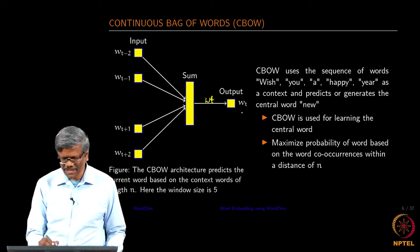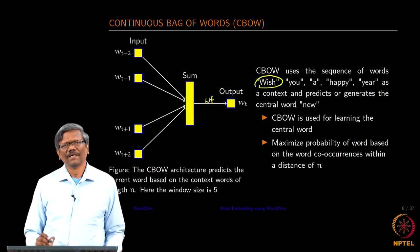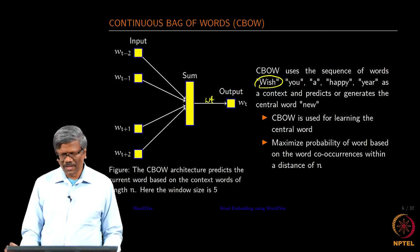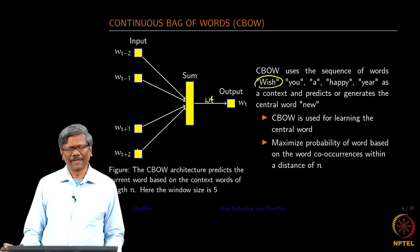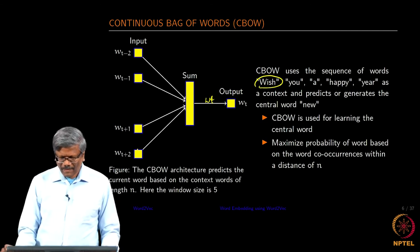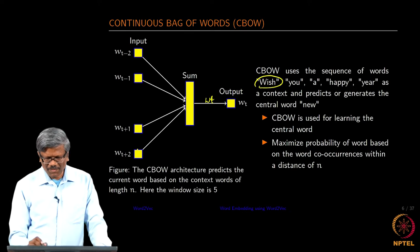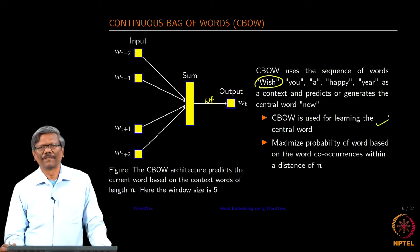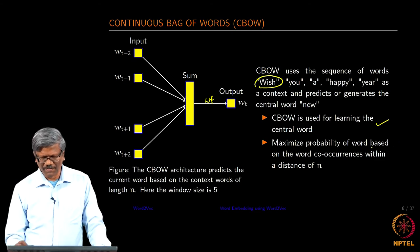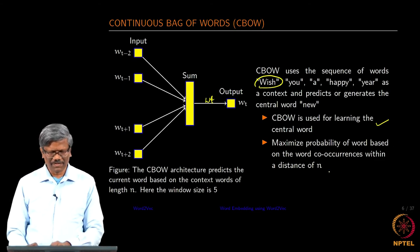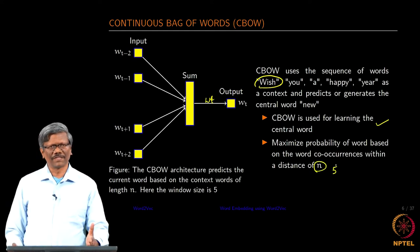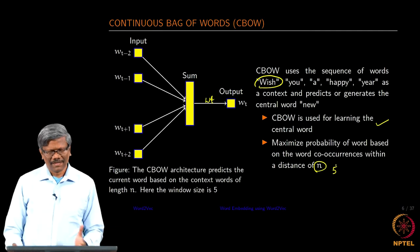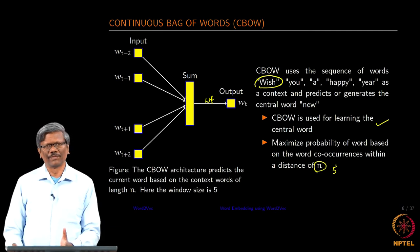For example, if I take 'wish' as my first word, I look at the one-hot vector related to 'wish' and then that will be input. CBOW is used for learning the central word. We want to maximize the probability of the word based on word co-occurrence within a distance of n. In this case it is 5. If the input size is 100, then the output size would also be 100.